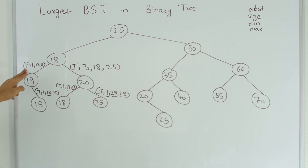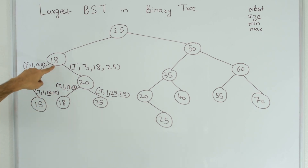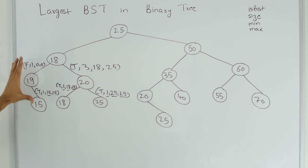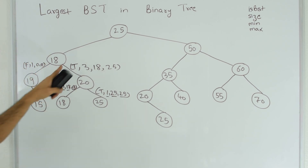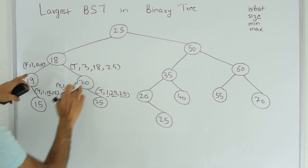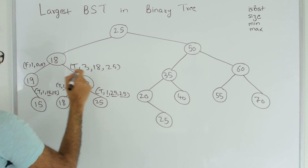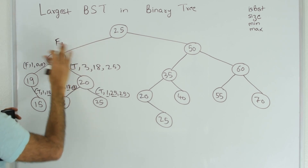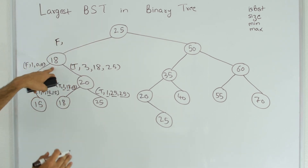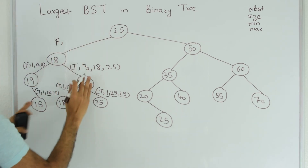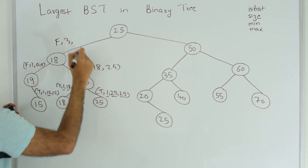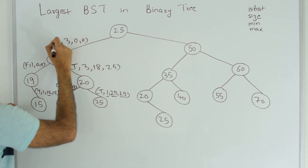Node 18 gets a false from the left side and true from the right side. Since one side is not a binary search tree, the subtree with 18 as its root cannot be a BST. So what 18 does is return the maximum size found from either left or right, which is 3. Node 18 returns false and size 3 to the root 25, with min and max not mattering.